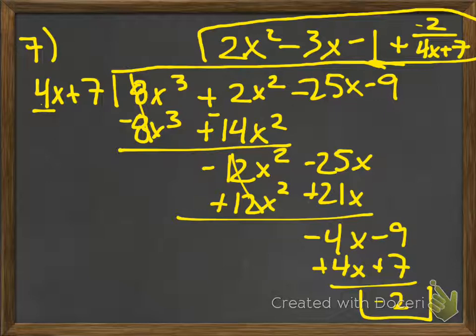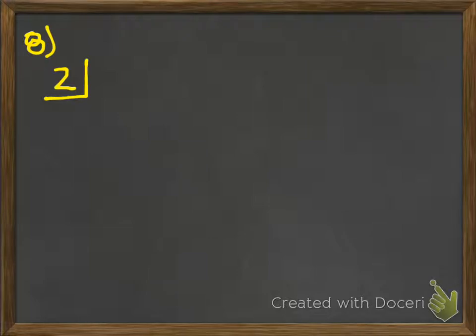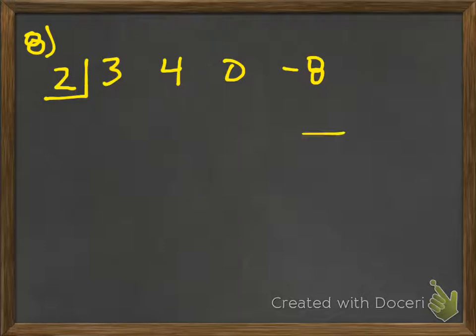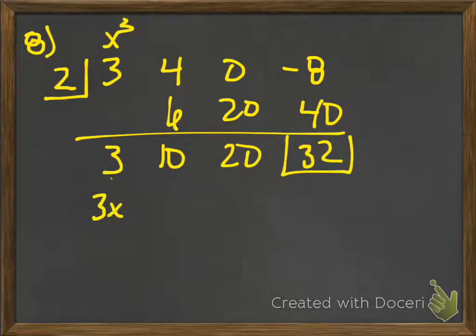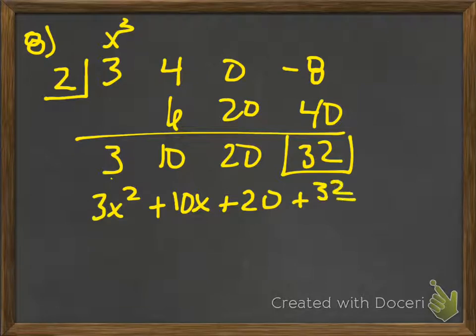Synthetic division. For x minus 2, you're going to change to a positive 2. Then you have 3, 4, 0 because there is no x, and negative 8. Bring down the first number. 2 times 3 is 6; 4 plus 6 is 10; 2 times 10 is 20; 0 plus 20 is 20; 2 times 20 is 40; combine — 32. Result: 3x squared plus 10x plus 20 plus 32 over x minus 2.